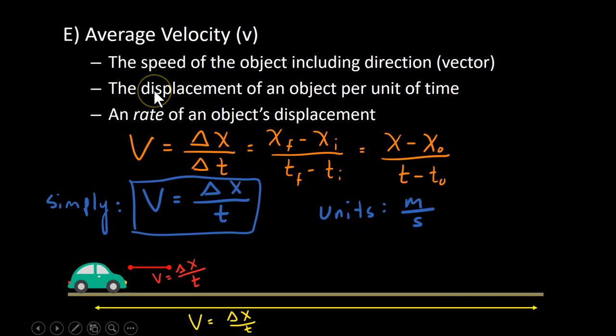Velocity. We're going to look at average velocity. It's the speed of an object, which you know, but it also includes direction. Velocity is something known as a vector. There's going to be another video that quickly talks about vectors a little later on. Or another way to define velocity, average velocity. It's the displacement of an object per unit of time,